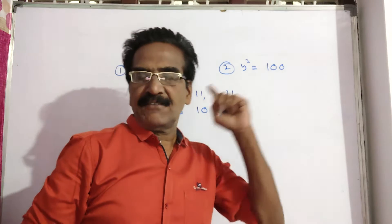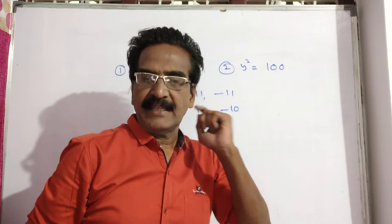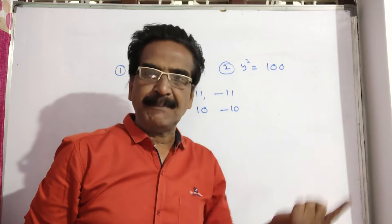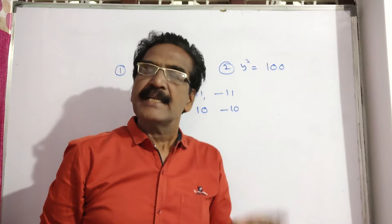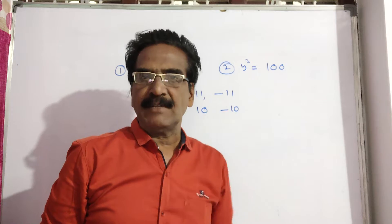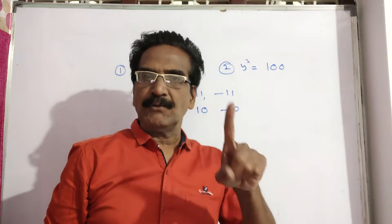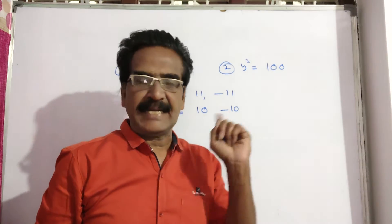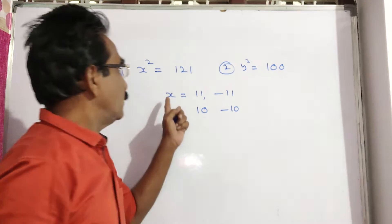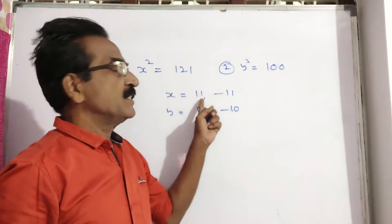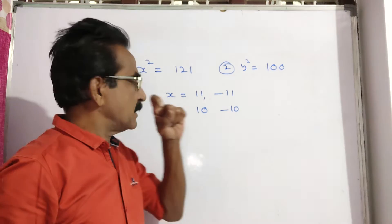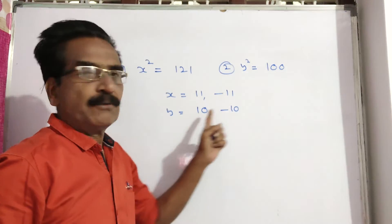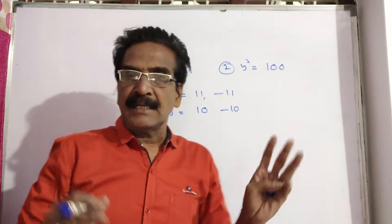So in case of square, or any even power — not only square, if any even power is given — you have to take the values of both plus and minus. So here x = ±11 and y = ±10.